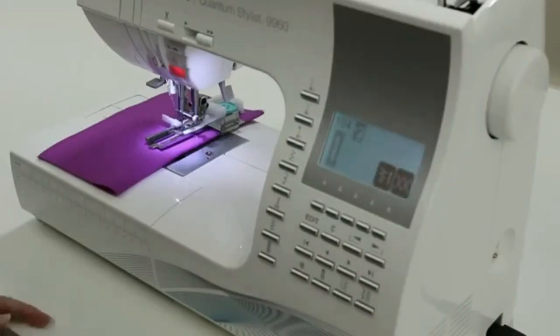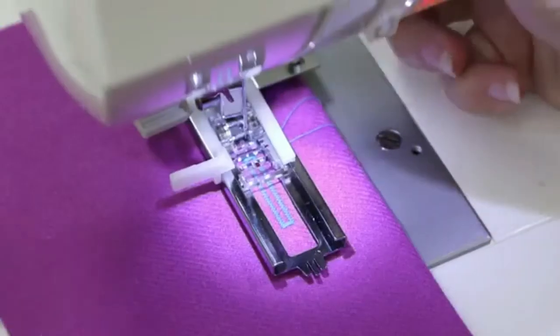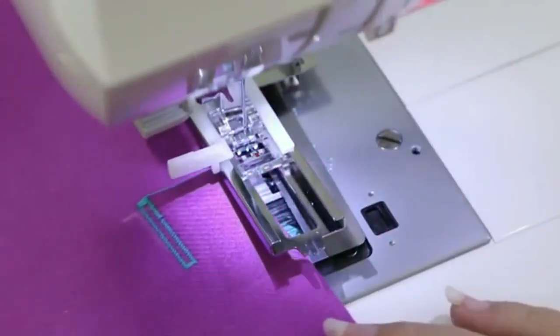The machine will stop sewing when the buttonhole is done. Press the automatic thread trimmer, raise the presser foot, and here's your buttonhole.